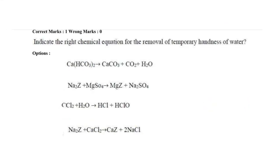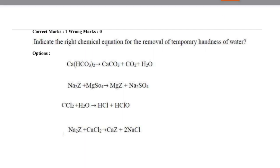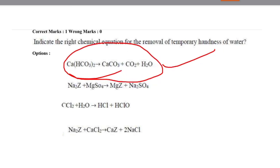Next question: indicate the right chemical equation for the removal of temporary hardness of water. The options included: Ca(HCO₃)₂ → CaCO₃ + CO₂ + H₂O; Na₂Z + MgSO₄ → MgZ + Na₂SO₄; Cl₂ + H₂O → HCl + HClO; and Na₂Z + CaCl₂ → CaZ + 2NaCl. Temporary hardness is caused by calcium and magnesium hydrocarbonates, and only option 1 contains Ca(HCO₃)₂, so option 1 is correct.